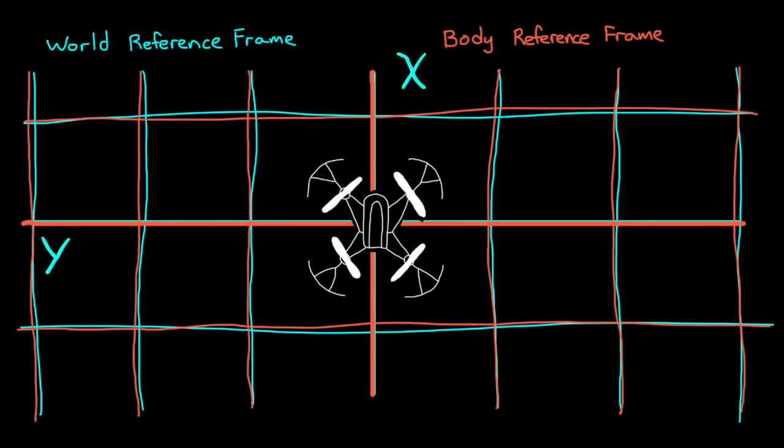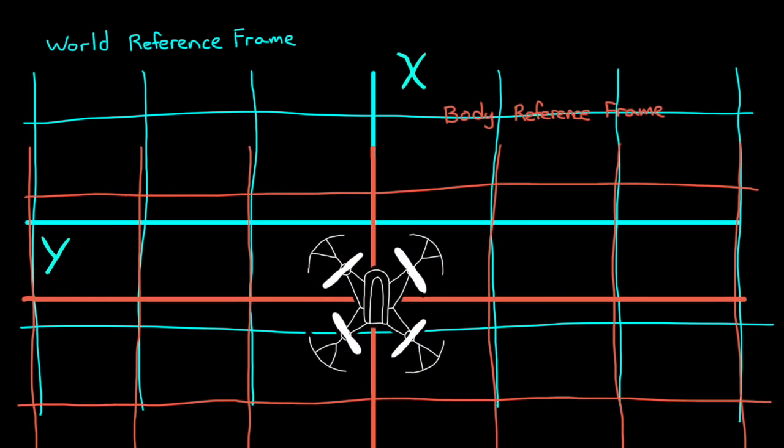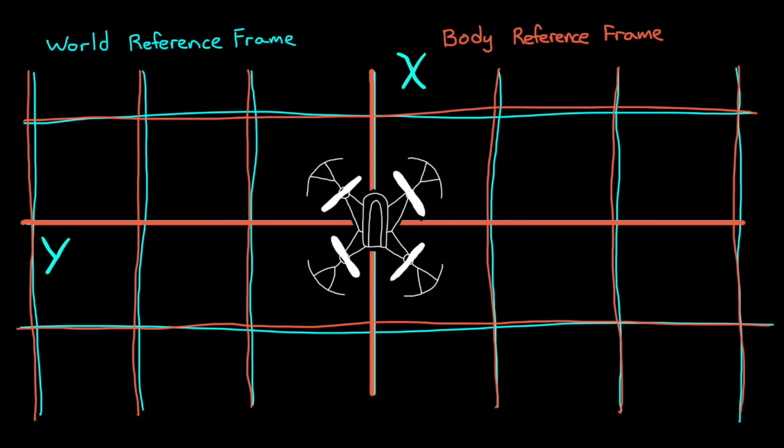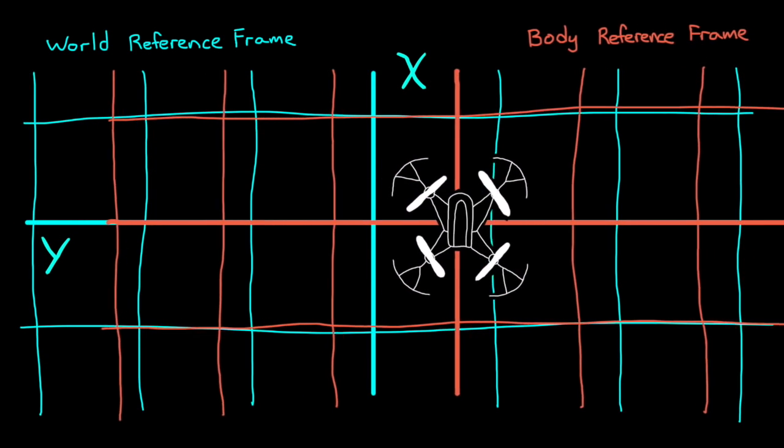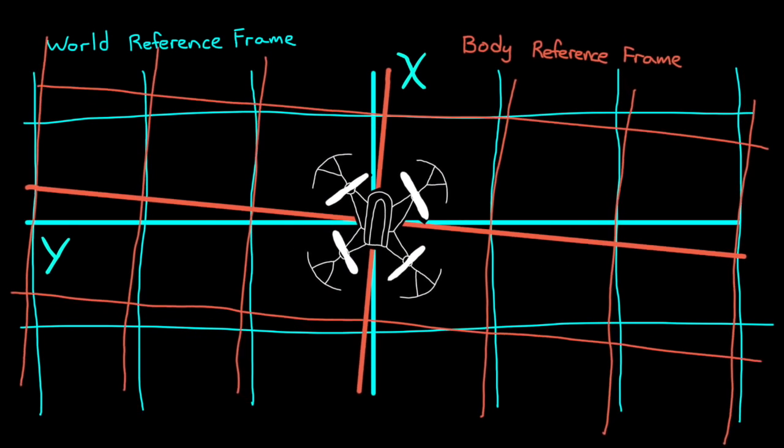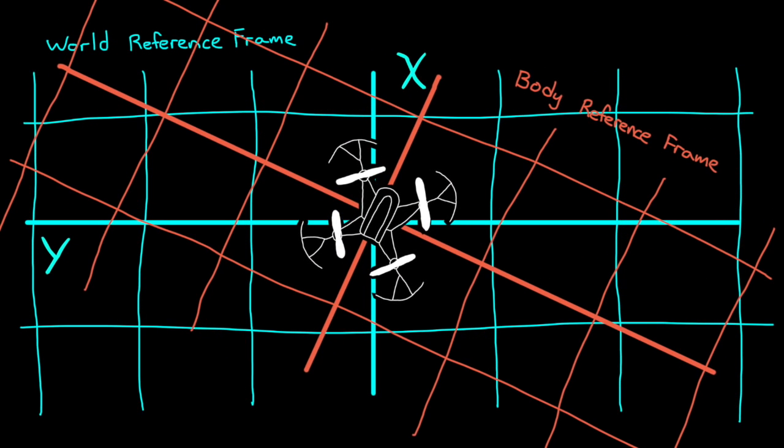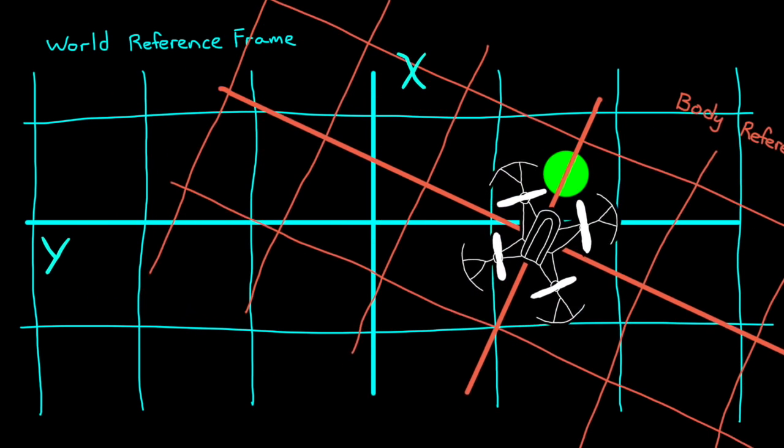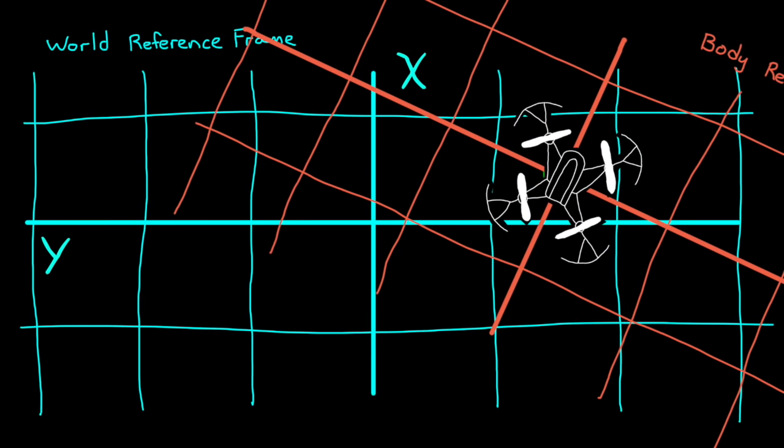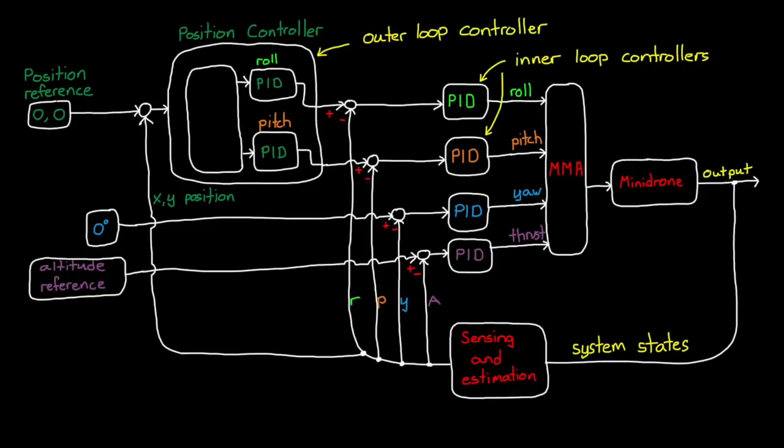And roll doesn't always move the drone in the Y world direction. It depends on how the drone is rotated, or its yaw angle. So if we need to move the drone to a very specific spot in the room, then it needs to know yaw in order to determine whether roll, pitch, or some combination of the two is needed to achieve that. So our position controller uses yaw to convert between the world X, Y frame and the body X, Y frame.